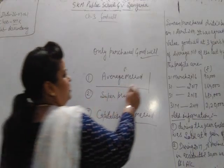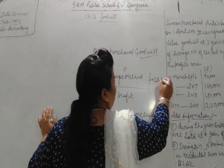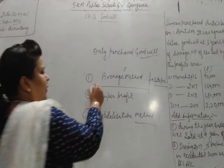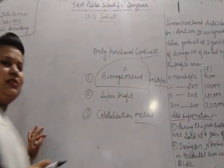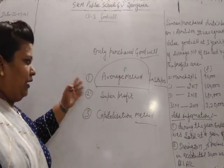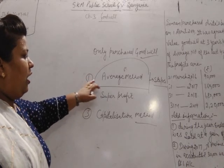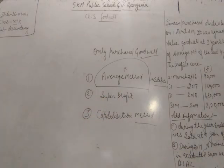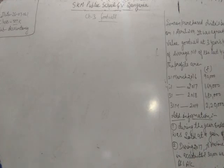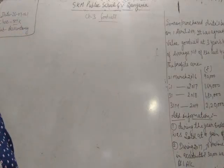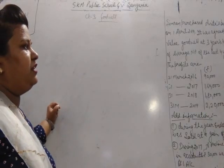In the last video I posted the steps used to calculate Goodwill by the Average Profit Method. Today we will discuss this method by solving a numerical problem so that we can understand how Goodwill will be valued through the Average Profit Method. There is a question: Simran purchased Anita's business on 1st April 2019. It was agreed to value Goodwill at three years' purchase of Average Profit.